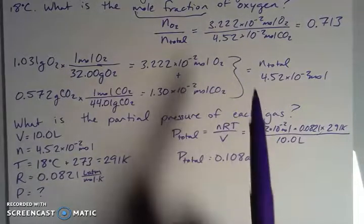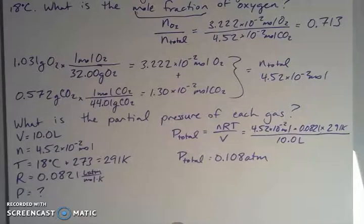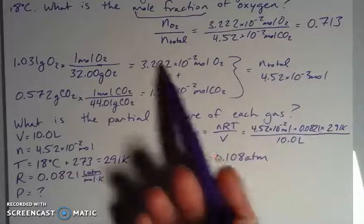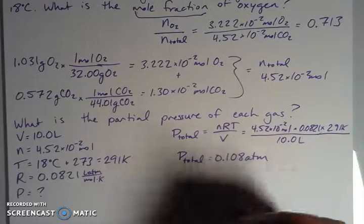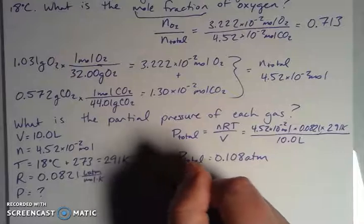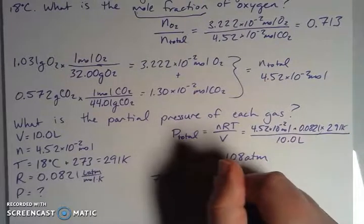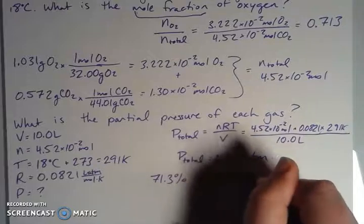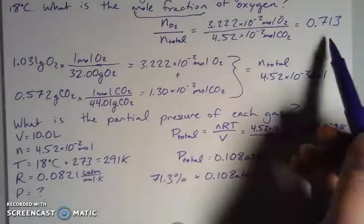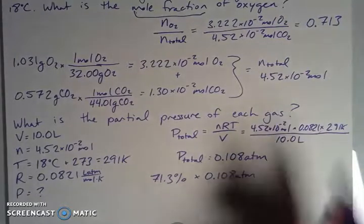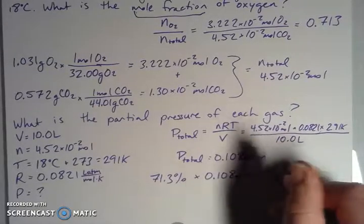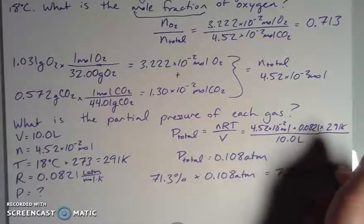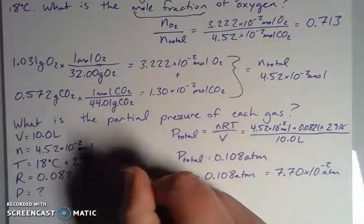Okay, so from this, because I figured out the mole fraction and because there is a direct relationship between the number of moles and the pressure, then whatever this ratio is, whatever this fraction is, it's going to be equal to the fraction of my pressure as well. So I can take 71.3% and multiply it by my P_total. So essentially that would be multiplying this by the mole fraction itself. So 0.713 times my 0.108, which I got for total, that's going to give me my partial pressure for oxygen of 7.70 times 10 to the negative 2 atmospheres. So that's my P of oxygen.